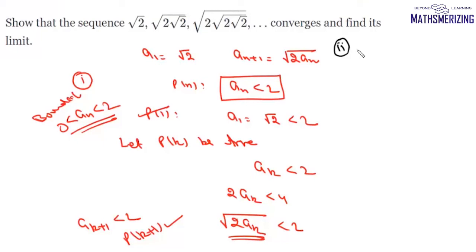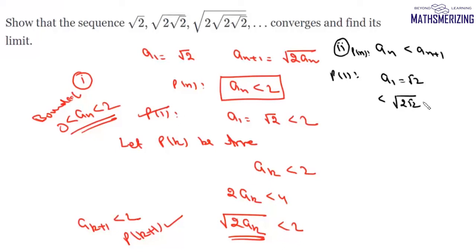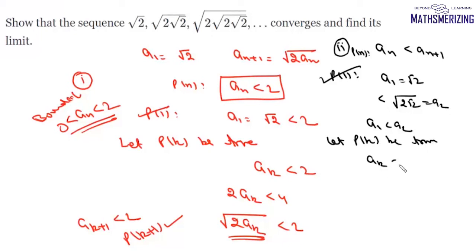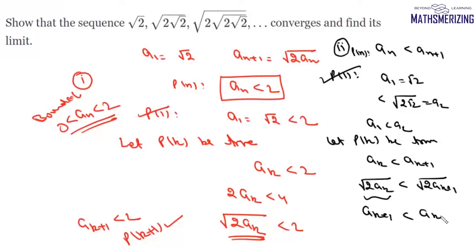For the second part we prove the sequence is monotone increasing, i.e., aₙ < aₙ₊₁. For n = 1: a₁ = √2 < √(2√2) = a₂, so it is true for n = 1. Assuming Pₖ is true, so aₖ < aₖ₊₁, we multiply by 2 and take the square root: √(2aₖ) < √(2aₖ₊₁), which gives aₖ₊₁ < aₖ₊₂, so Pₖ₊₁ is true.